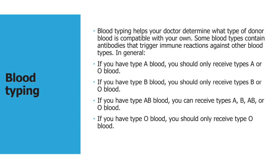Blood typing helps your doctor determine what type of donor blood is compatible with your own. Some blood types contain antibodies that trigger an immune reaction against other blood types. If you have type A blood, you should only receive type A or type O blood.